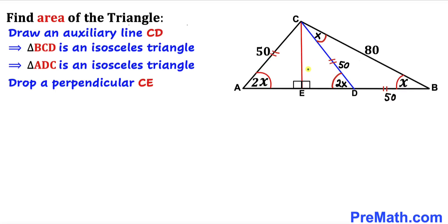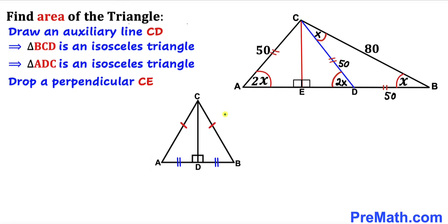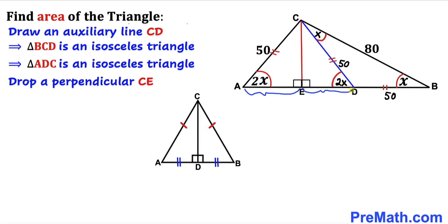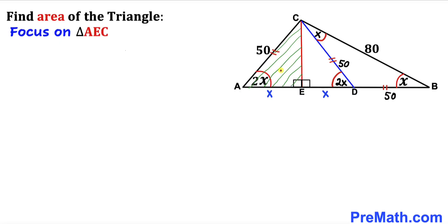In the next step, I drop a perpendicular CE from point C onto line AD. Since the two equal side lengths of isosceles triangle BCD make CE a perpendicular median, sides AE and ED are equal in length. If we call AE as x, then ED is x as well.